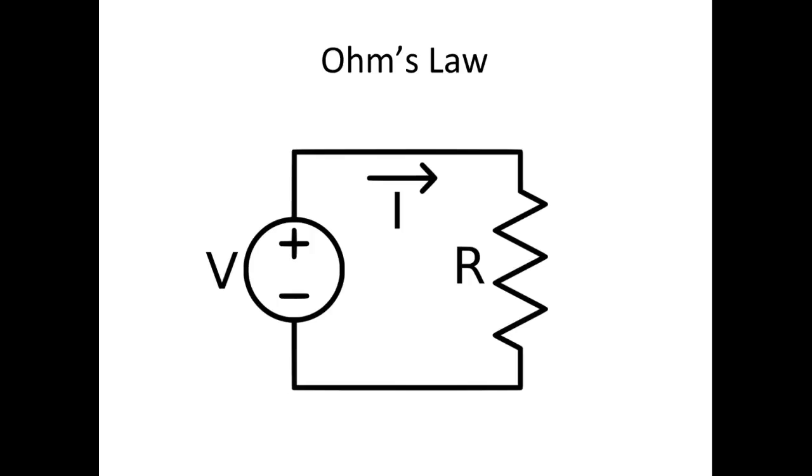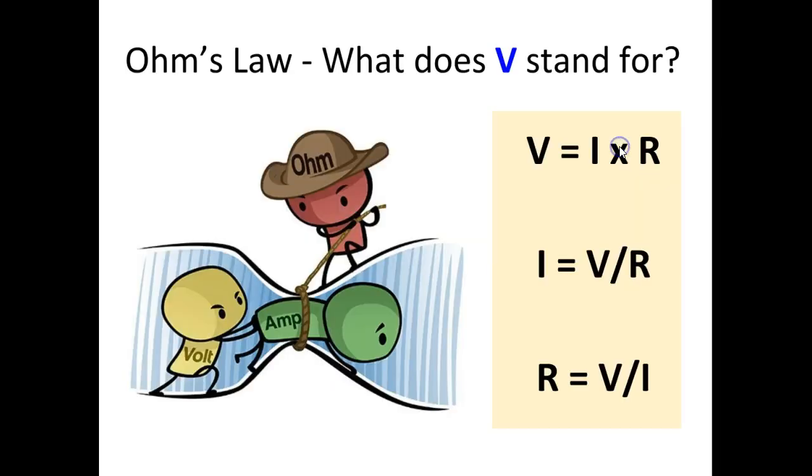Let's review Ohm's law. Ohm's law is written as V equals I times R, I equals V divided by R, or R equals V divided by I.